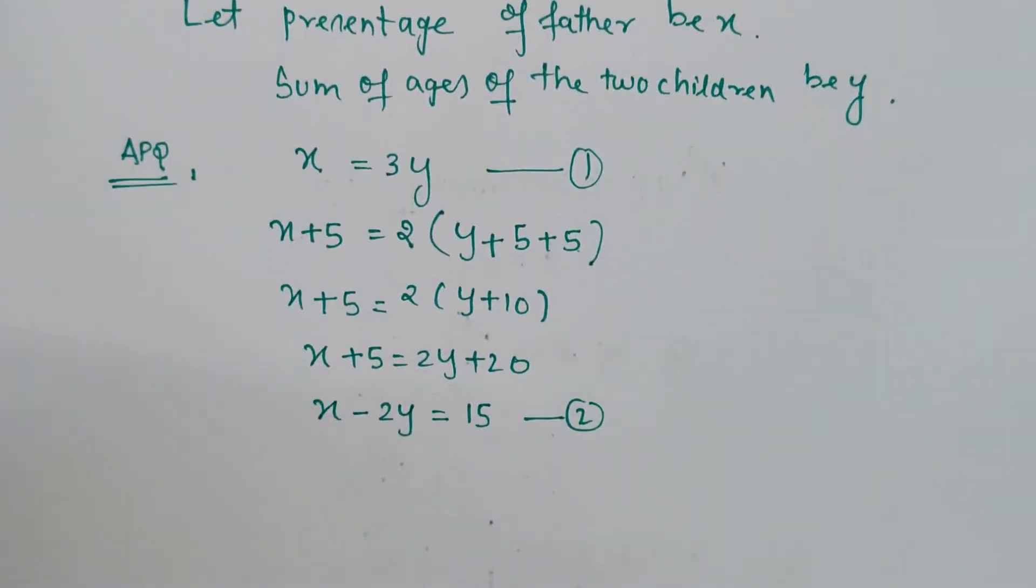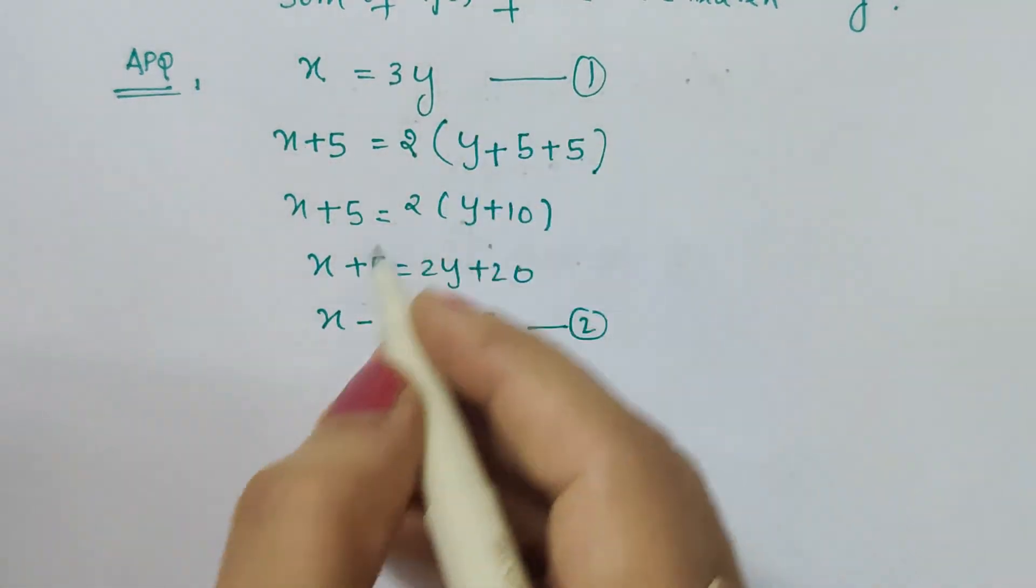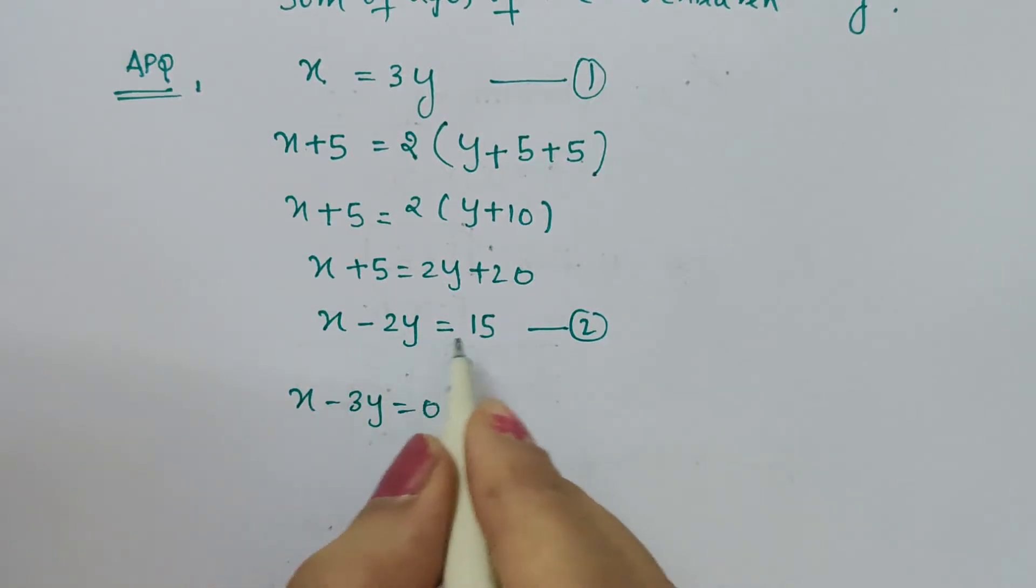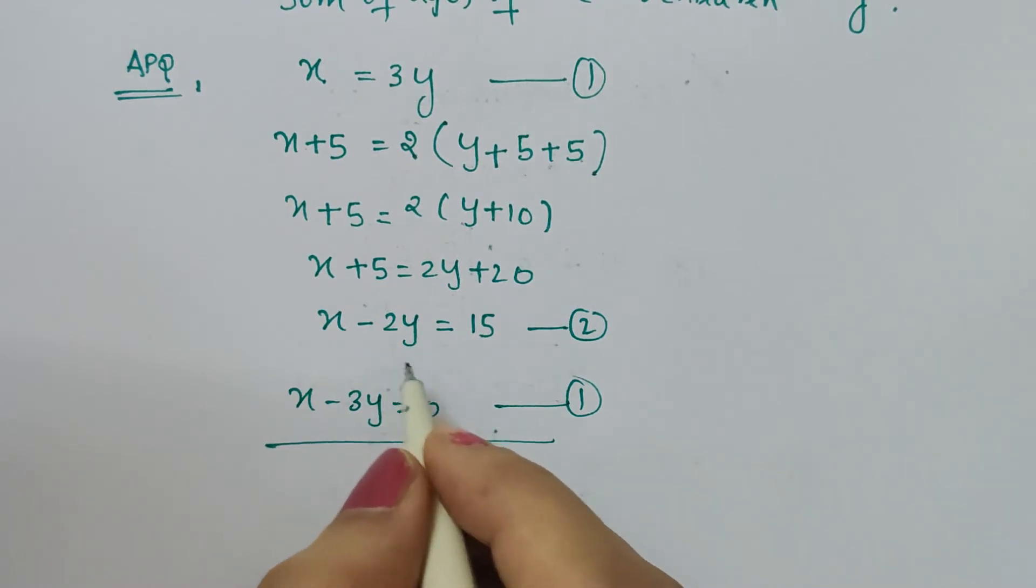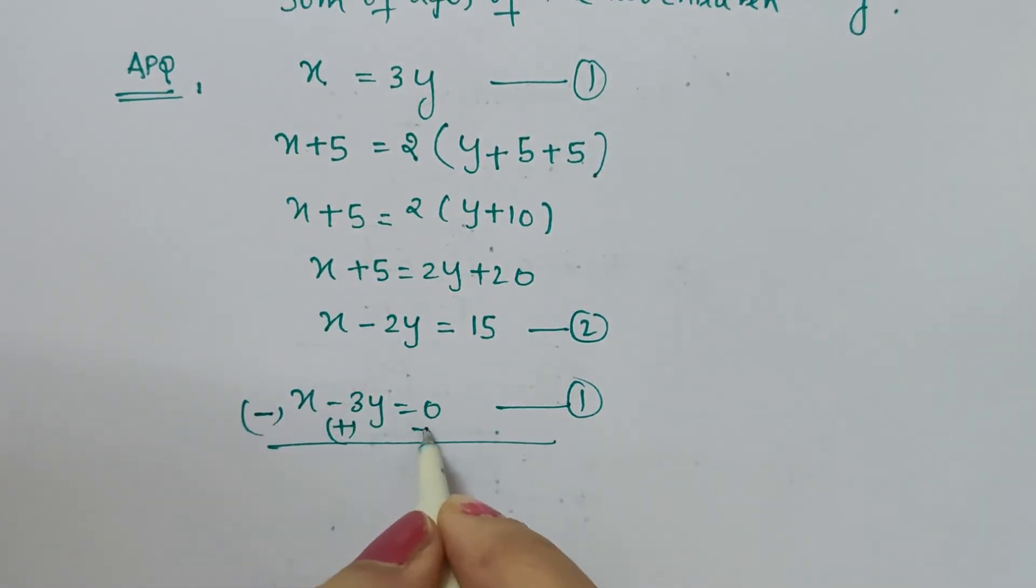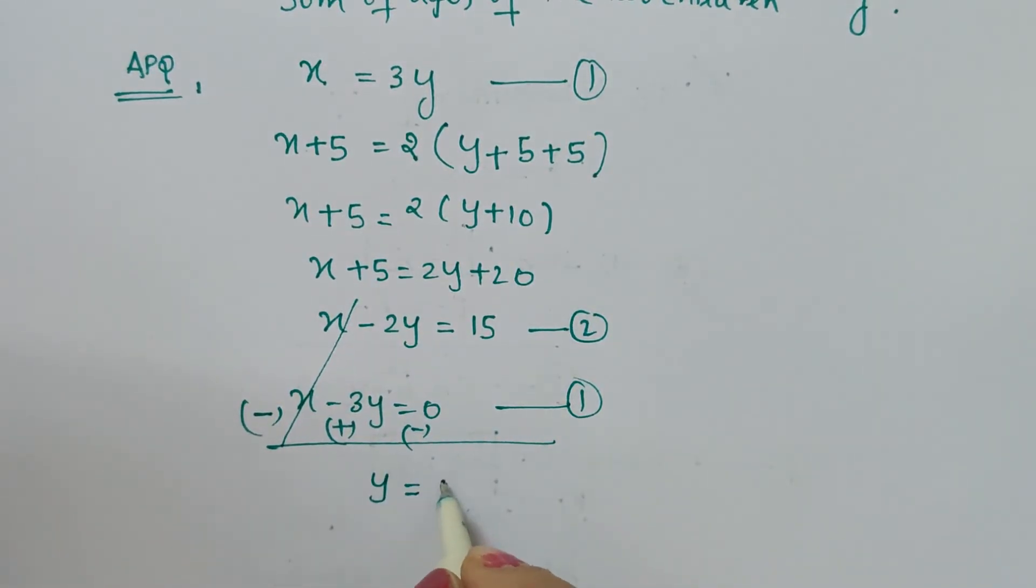Now we can easily solve it by using elimination method. Rewrite equation 1: x - 3y = 0. This is my second equation written above. Let's change the sign, and after changing the sign, this term gets cancelled and we are left with y = 15. The bigger number is 3 and its sign is plus, so we have taken y.